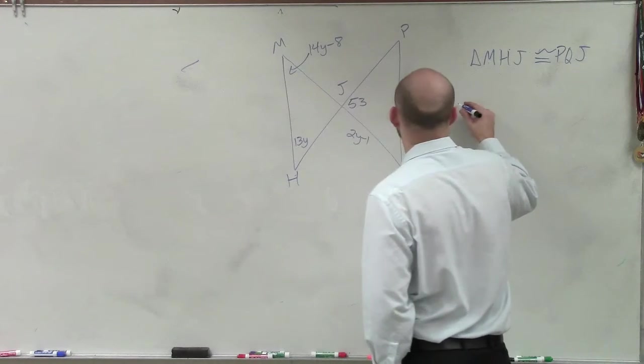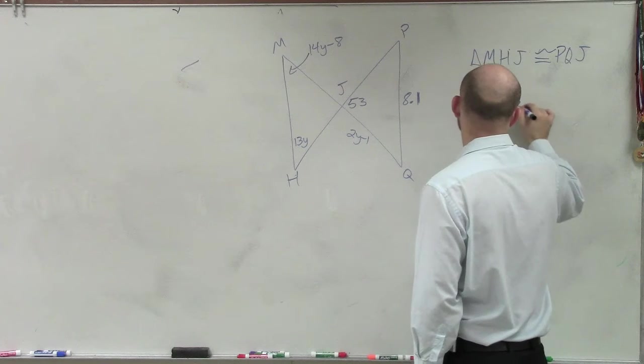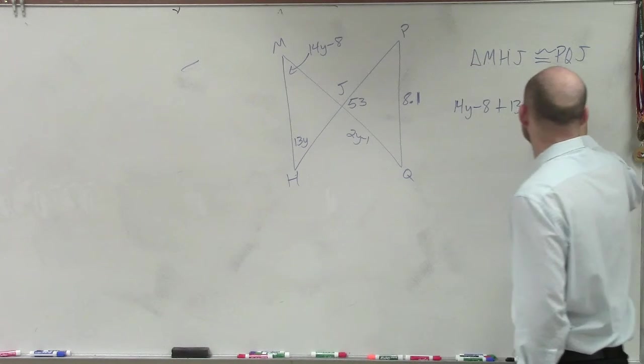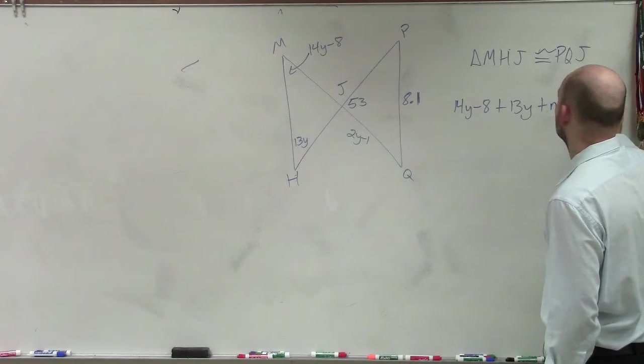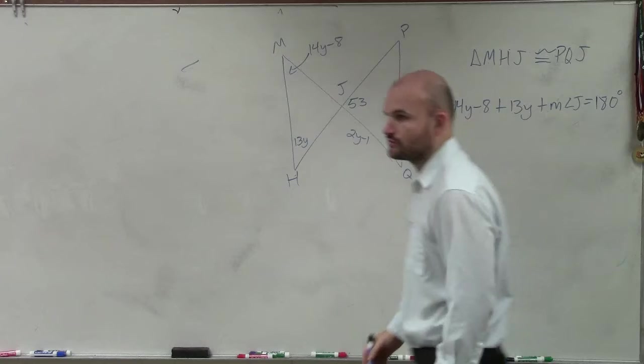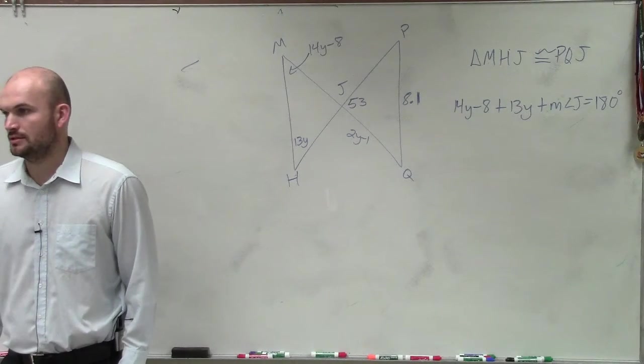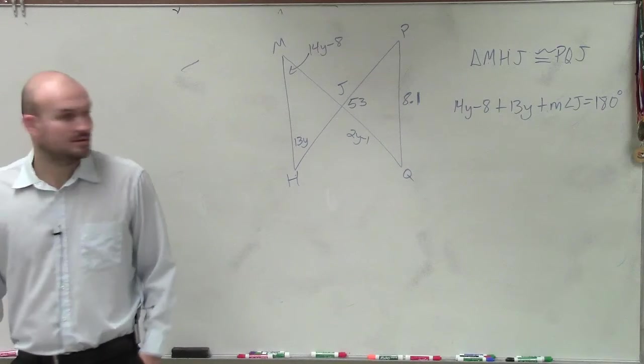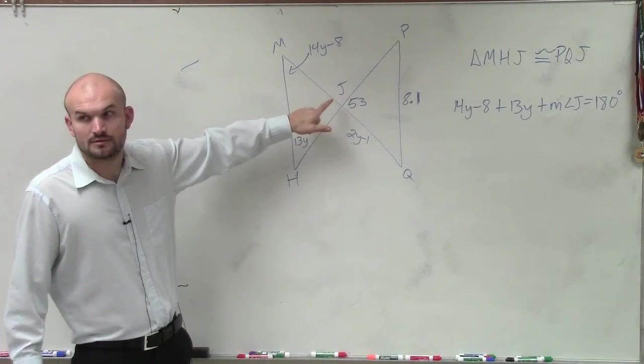So as of right now, I have 14y minus 8 plus 13y plus the measure of angle J is equal to 180 degrees. Would you guys agree with that statement? This angle plus this angle plus that angle equals 180, right?